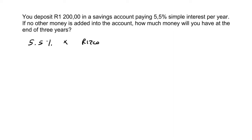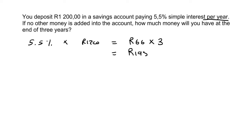"Of" means times, and if you work that out, that'll be 66 rand. You're going to earn 66 rand, but that is per year. So you can then multiply that by 3 because you're looking for 3 years. If you work out 66 multiplied by 3, you get 198 rand.